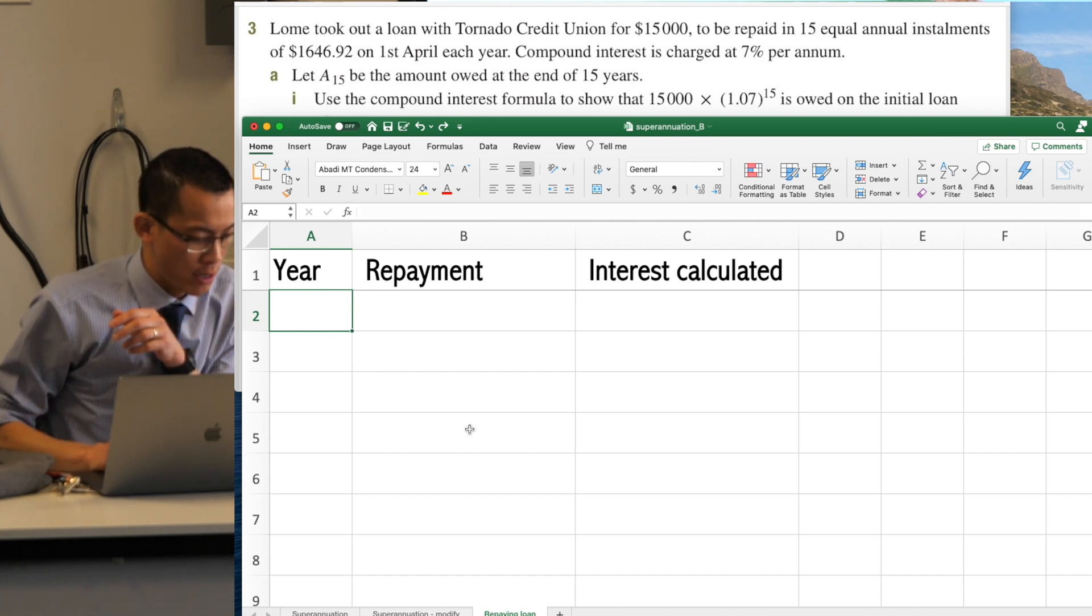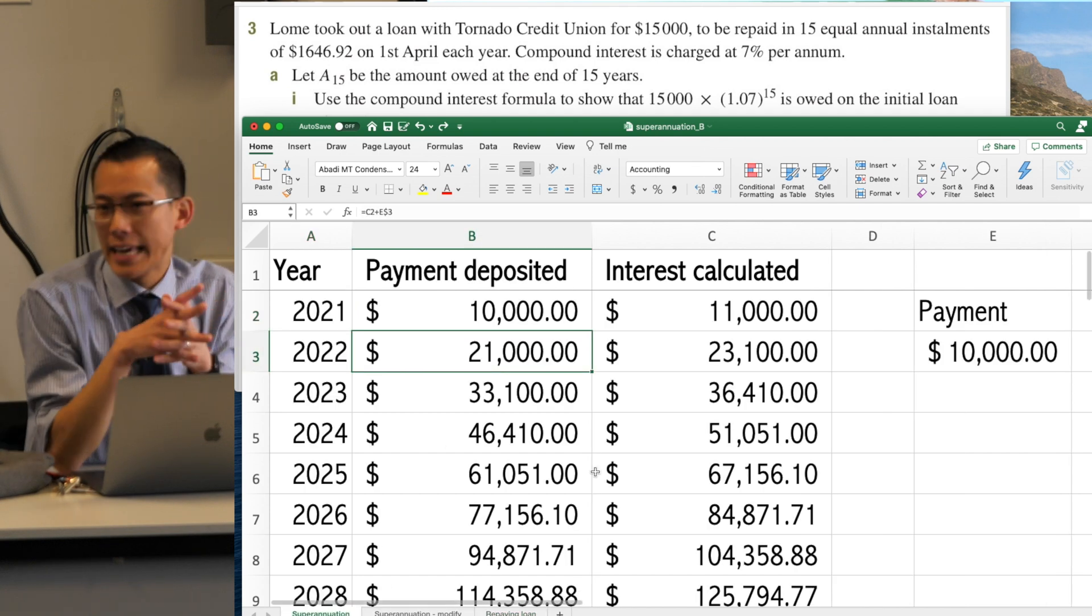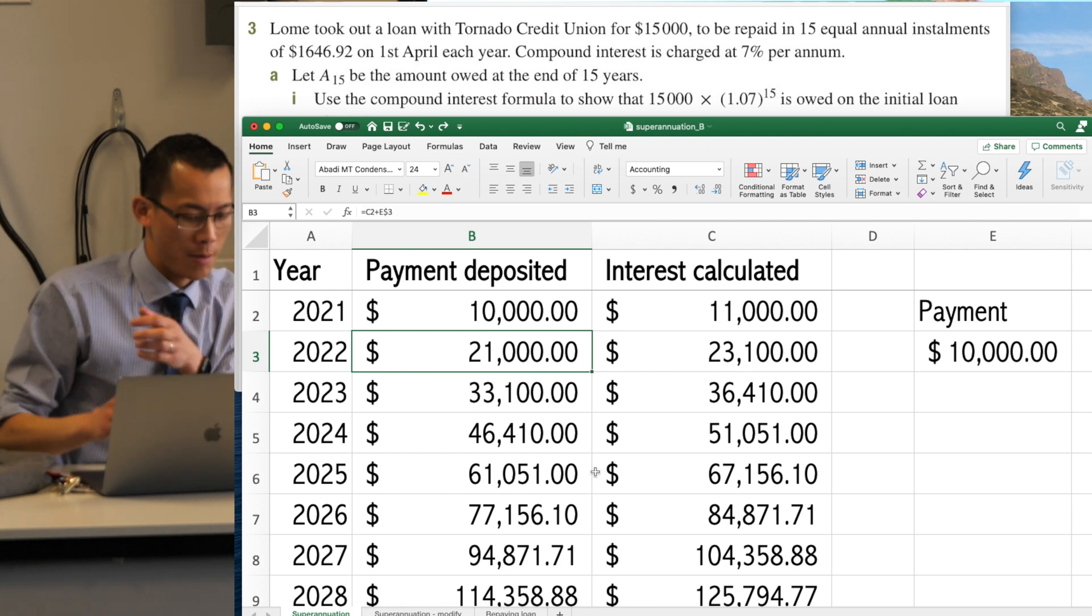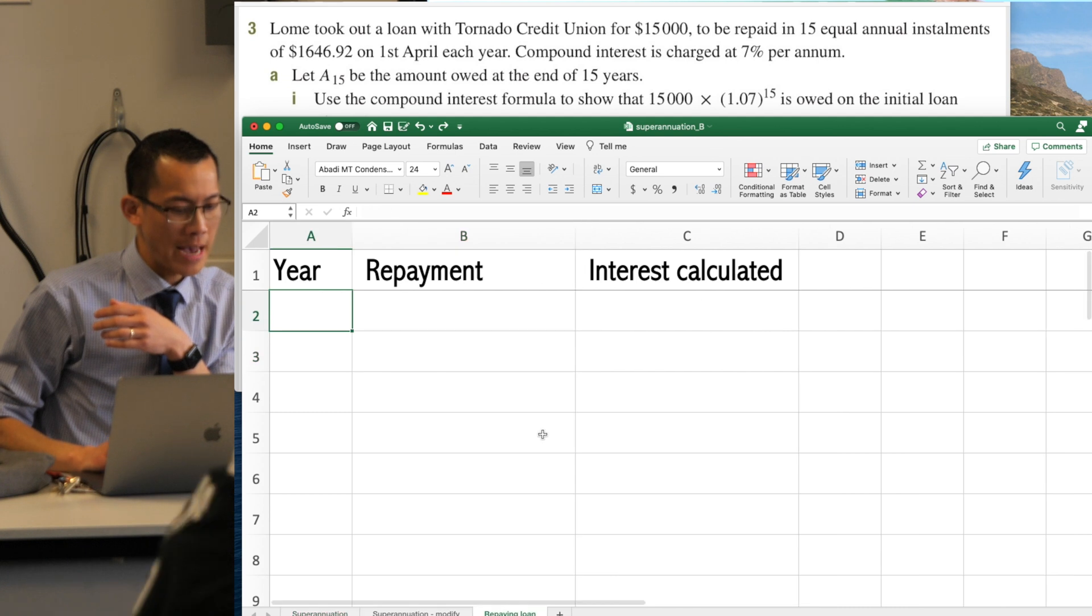Now in the previous one, and I'll show you it just here, they gave us a specific year. It's like, oh, it starts in 2021, right? Or 2005, or what it happens to be. Have a look at this question. Do they tell you when it starts?